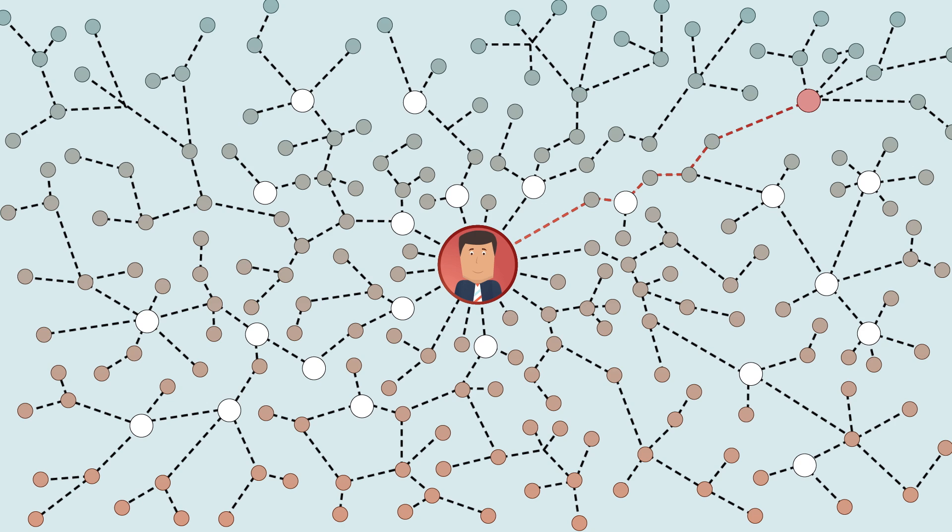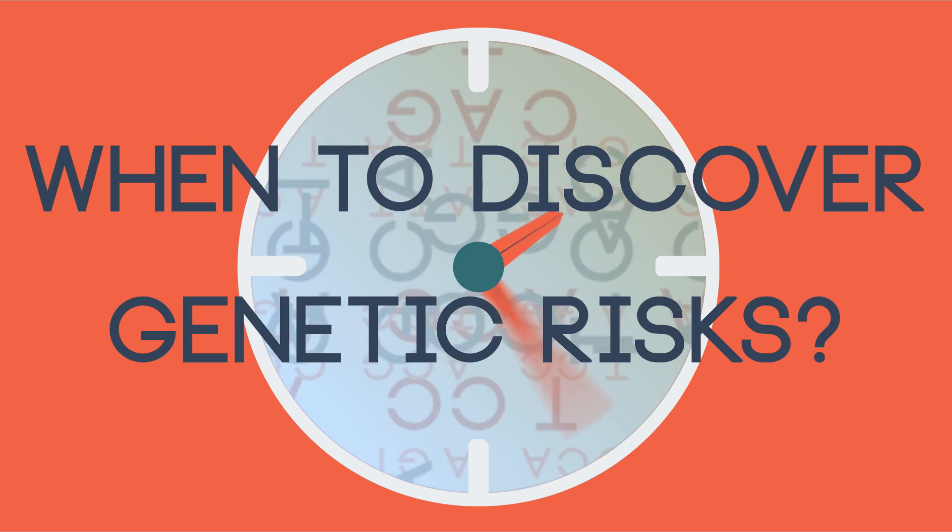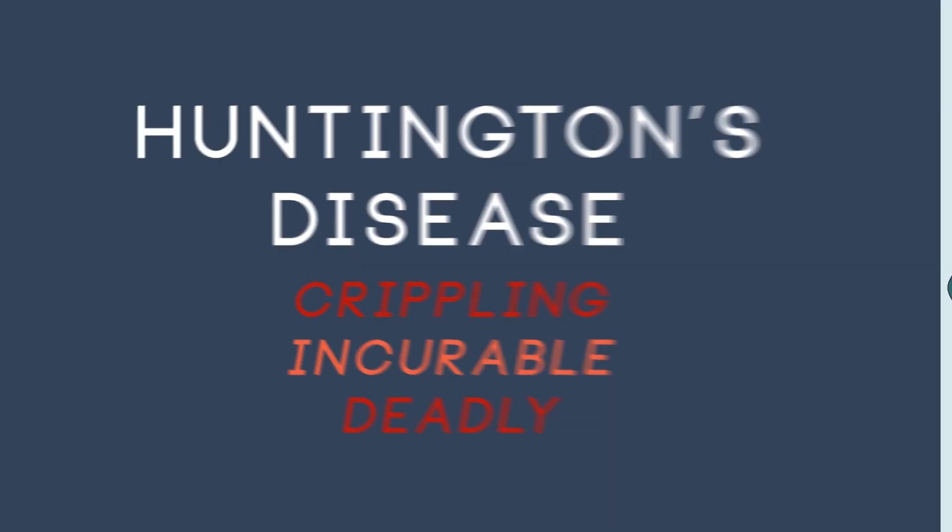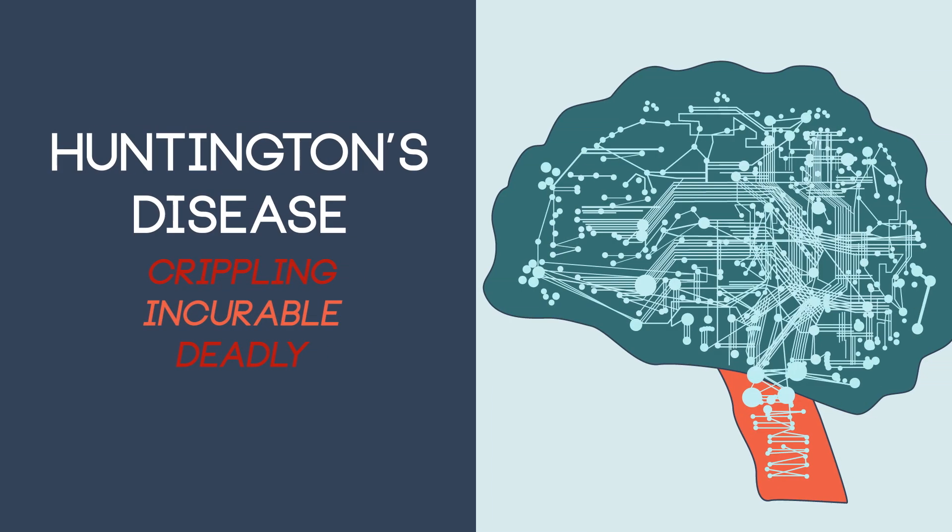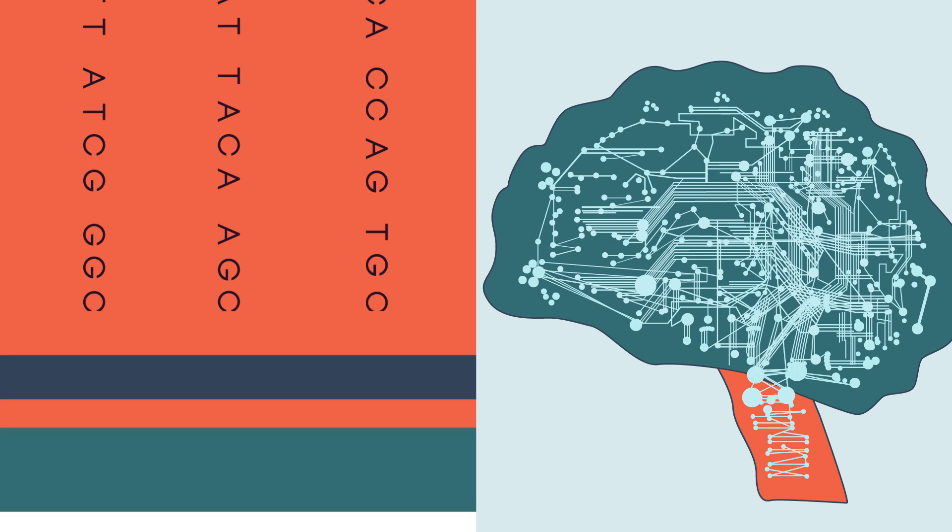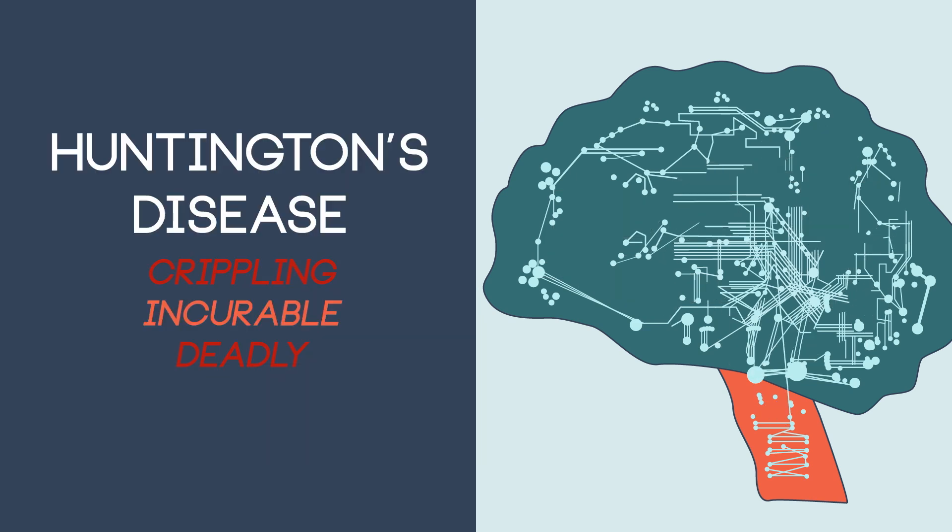And perhaps most challenging, patients and doctors must decide when to discover genetic risks and when to leave well enough alone. Huntington's disease is a crippling, incurable, and ultimately deadly neurodegenerative disorder which appears in middle age. It also has a reliable genetic test available at any age. Would you want to know if you're going to die within 20 years?